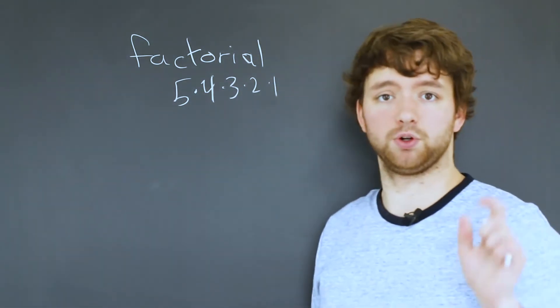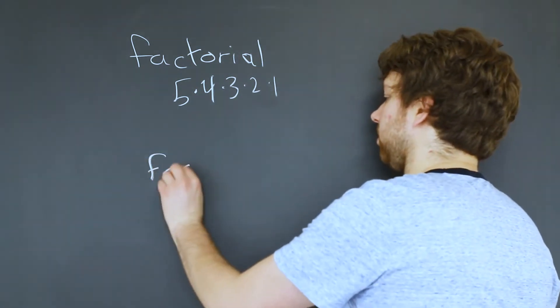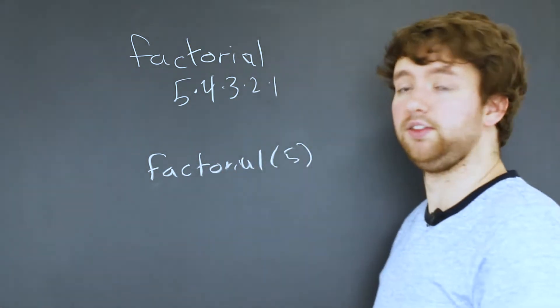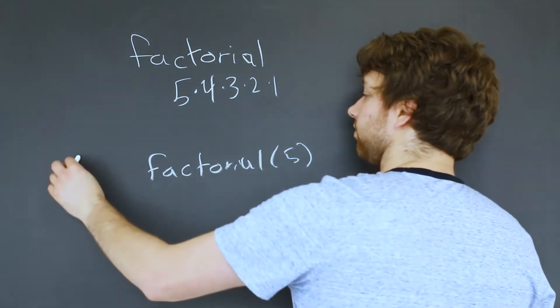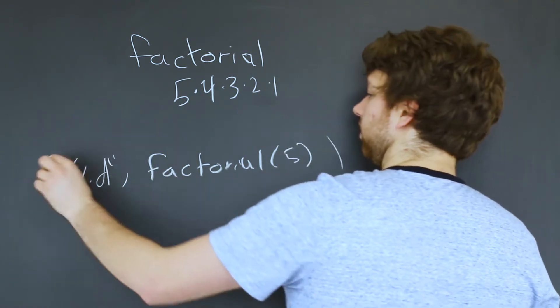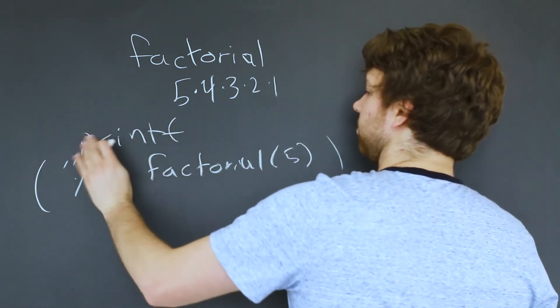We could manually calculate the factorial every time we need it, or we could just say factorial and pass in a 5, and then this would return an integer. So we could literally use this as an integer, for example, we could print it inside of a printf like such.